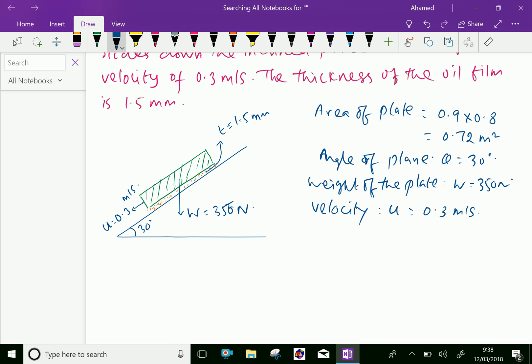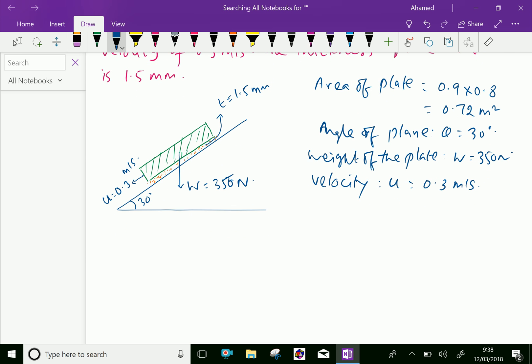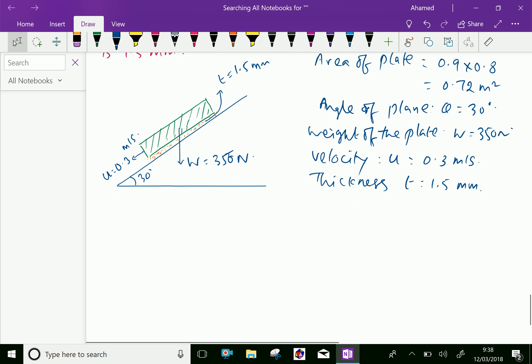Thickness of the oil film, t equals 1.5 mm, which is 1.5 mm means 0.0015 meters.